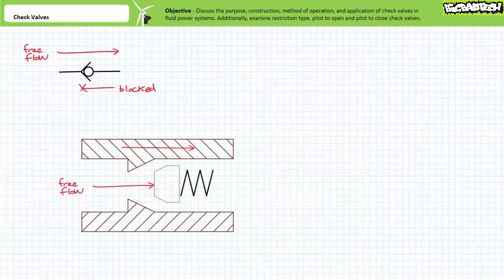Note in the free flow direction, fluid must overcome the force of a light biasing spring. This implies the check valve in the free flow direction isn't exactly free and necessitates a little push. This initial push is known as cracking pressure and is the pressure at which the poppet partially unseats.